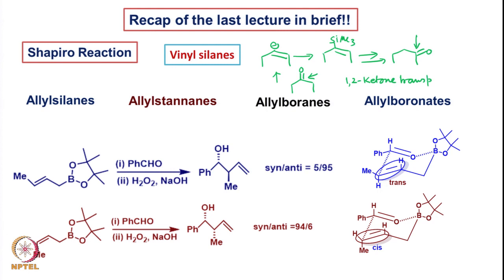After that, we looked at how allyl silanes, allyl tin, allyl boranes, and allyl boronates of this type of substrates react. We also saw how crotyl substrates can be equilibrated depending on which metal salt is used. Towards the end, we looked at these allyl boronates and how they react with benzaldehyde — if the geometry is trans, then we get the anti product as the major product. This reaction we discussed in detail.